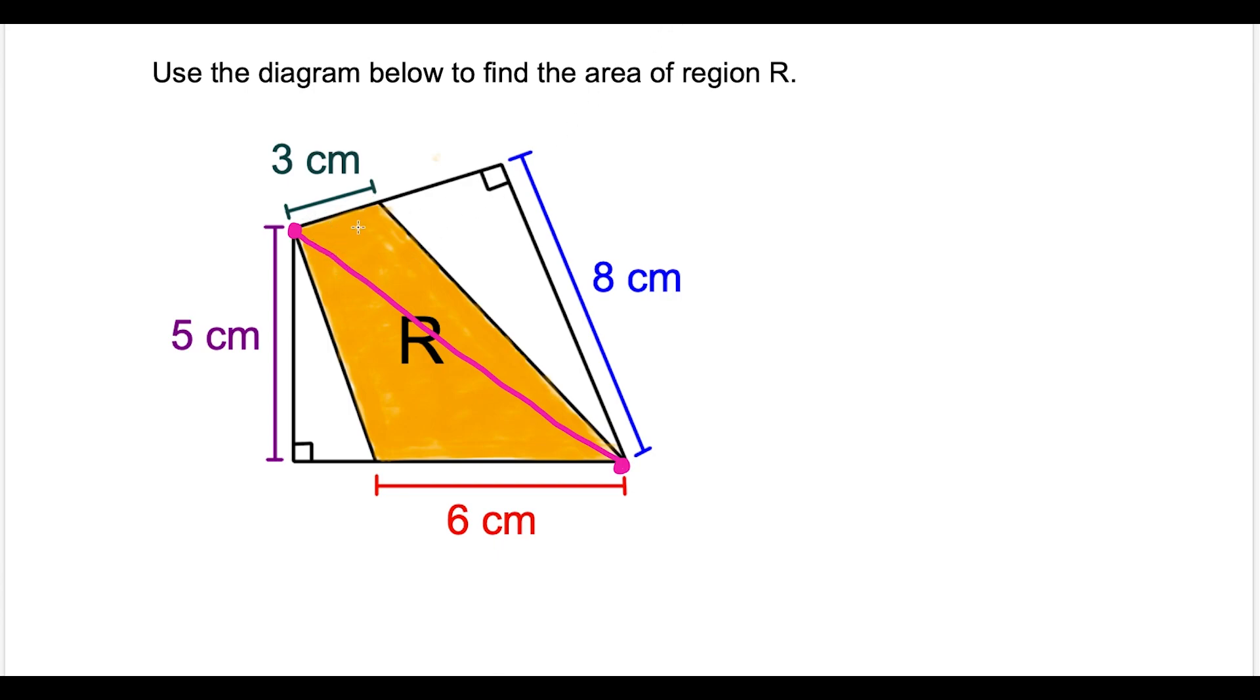What they give us is this side length is three centimeters, this is six centimeters, we have five and eight centimeters, but we do have that these are two right angles.